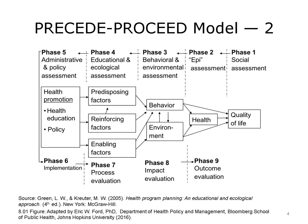Here we see a model adapted from the PRECEDE-PROCEED model with permission. It starts in the upper right-hand corner with Phase 1 being a social assessment, where you look at a community or population and make assessments about its quality of life or lack thereof. For this example, let's say we want to build bike lanes and increase the number of people biking to work.